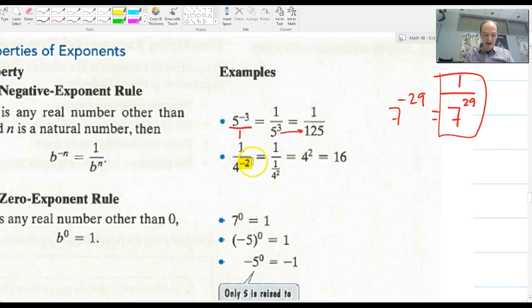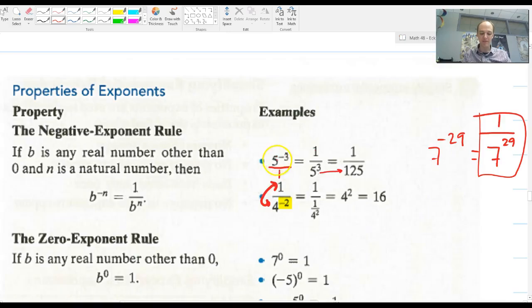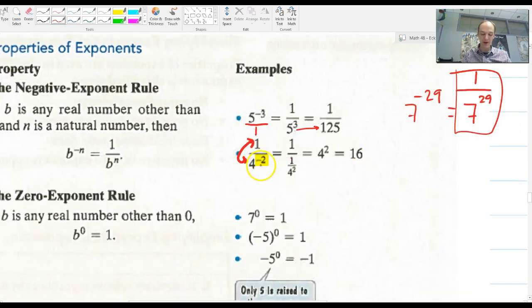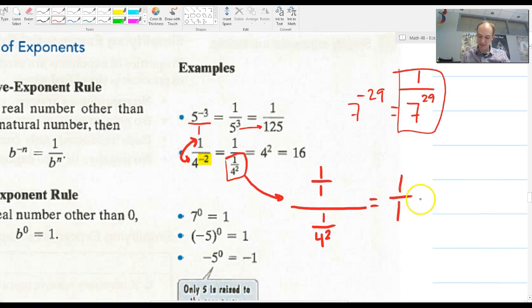When you have a negative on the bottom of a fraction, the same thing happens. Now, we usually shortcut this just a little bit and say that it immediately flips, but that's not really what's going on. And your book shows you exactly what really is going on. If we have 4 to the negative 2, that becomes 1 over 4 to the 2. And, hey, wait a minute. Remember the rules about dividing fractions? Let's take a look at that. So, this is 1 over 1 over 1 over 4 squared. Well, dividing fractions is the same as multiplying by the reciprocal. Right, so I took the reciprocal of this guy down there and brought it up here for multiplying.